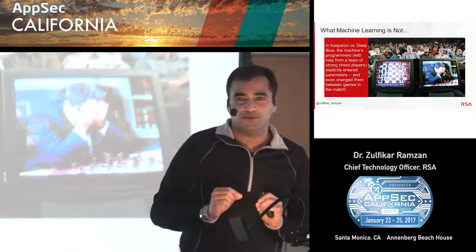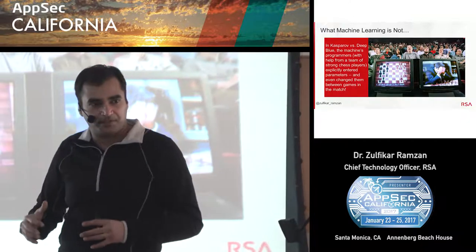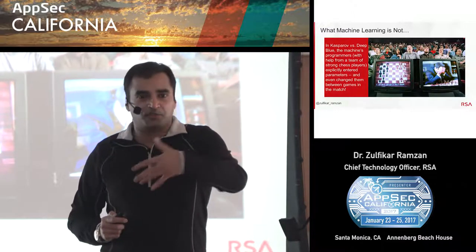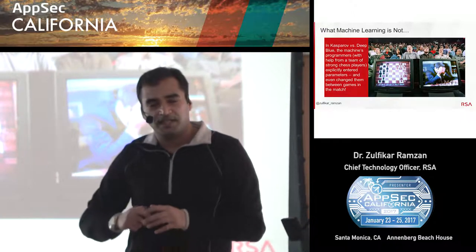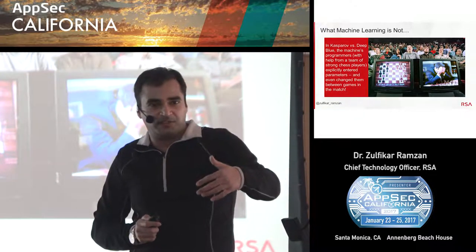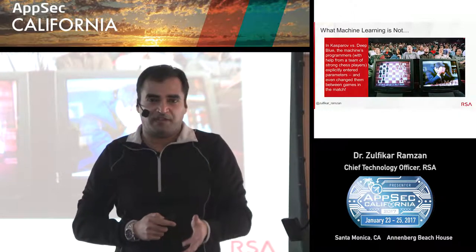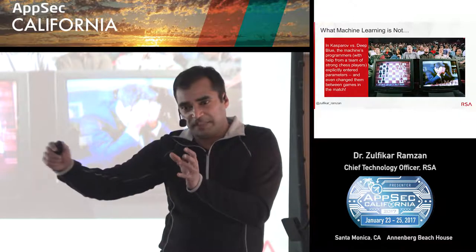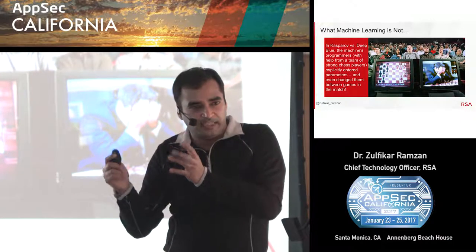What's interesting about Deep Blue is that it's not a machine learning system. The way it was developed, the team hired a group of grandmasters and strong players who developed an evaluation function — a function that could look at a chess position and determine who was better and by how much. Deep Blue itself would evaluate a number of different positions, consider possible moves and responses, and work its way backwards to find the right initial move. This is an approach where a human team came up with the evaluation function, and the computer leveraged its computational power to apply that function as many times as it could.